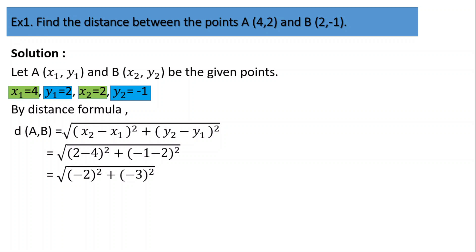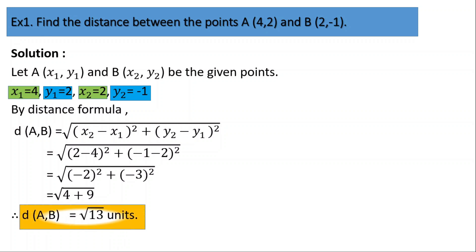The square of every negative number is always positive. So (-2) squared is 4 and (-3) squared is 9. It becomes the square root of 4 plus 9, which is the square root of 13. So the distance between point A and B is √13 units, and this is the final answer.